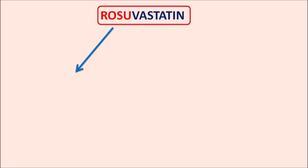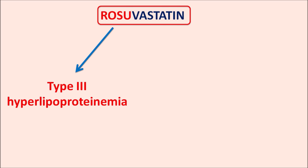Rosuvastatin can be used in different types of dyslipidemia. Among them, it can be used in the treatment of type 3 hyperlipoproteinemia — a type of dyslipidemia where lipoprotein levels are elevated. In this type 3, LDL is not directly involved; instead, we observe elevated levels of beta-VLDL, the beta form of VLDL, the lipoprotein that carries triglycerides. Rosuvastatin can reduce VLDL levels, so it acts not only on LDL and HDL but also on VLDL.